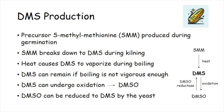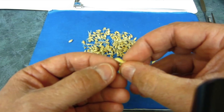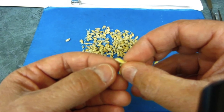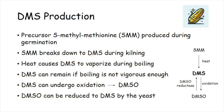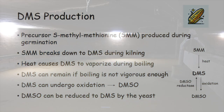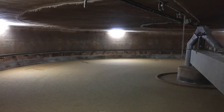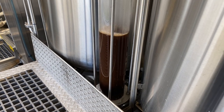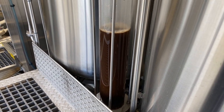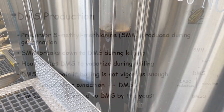DMS is formed during kilning as a result of the breakdown of a precursor called S-methylmethionine (SMM). SMM forms during the germination process in the barley kernel embryo, and breaks down into DMS at elevated temperatures in the malt plant and brew house. The amount of DMS produced during brewing is directly tied to the amount of SMM in the wort.